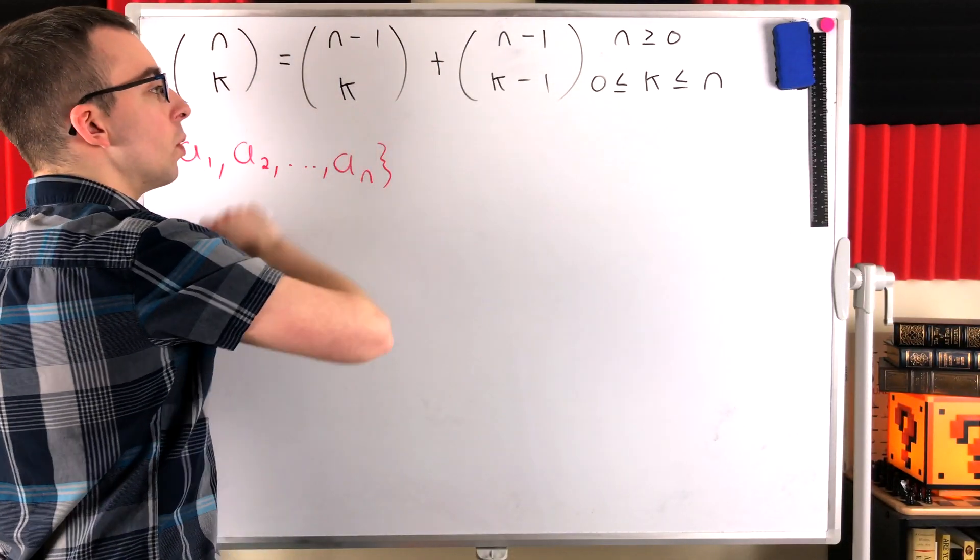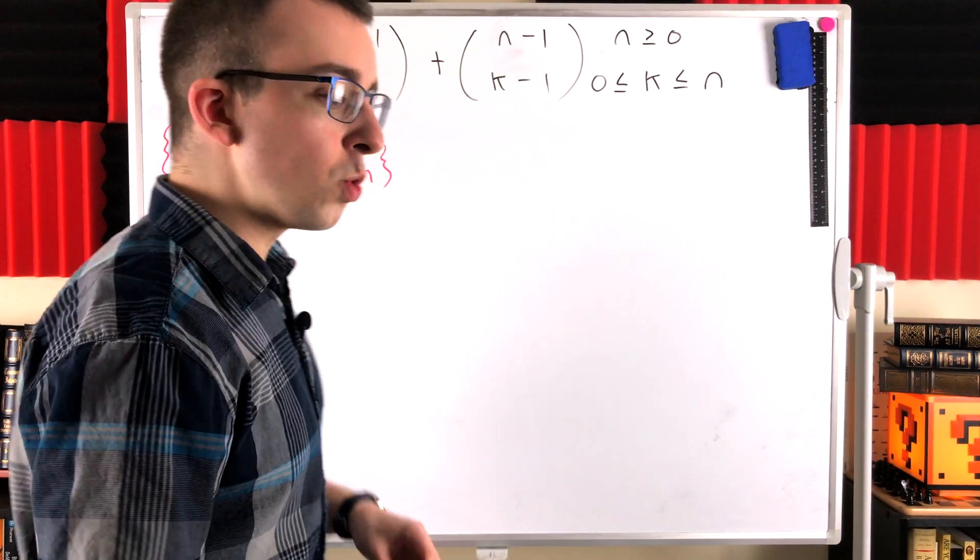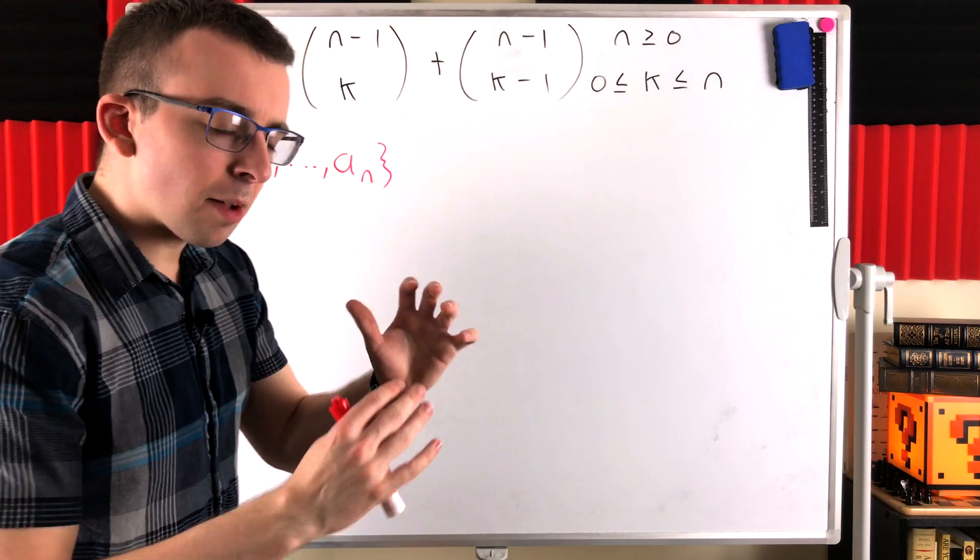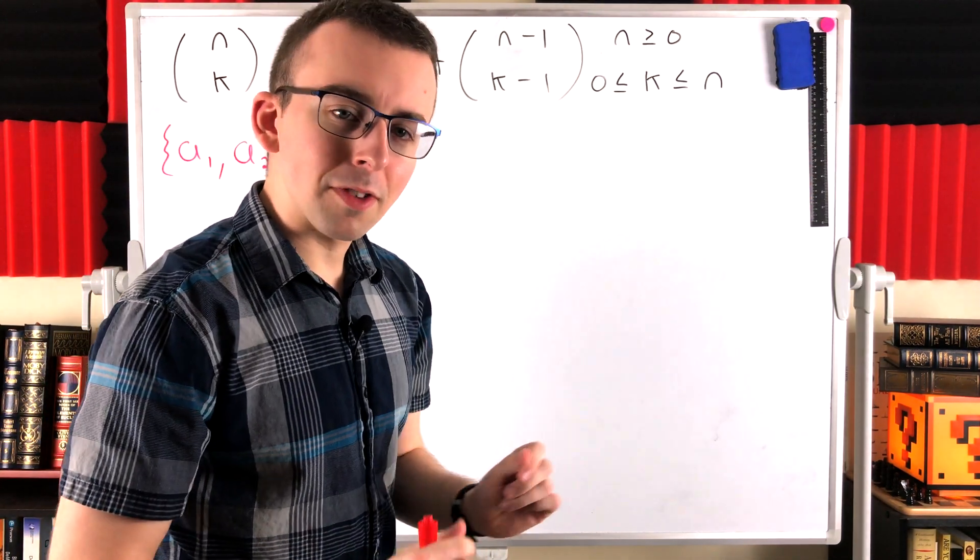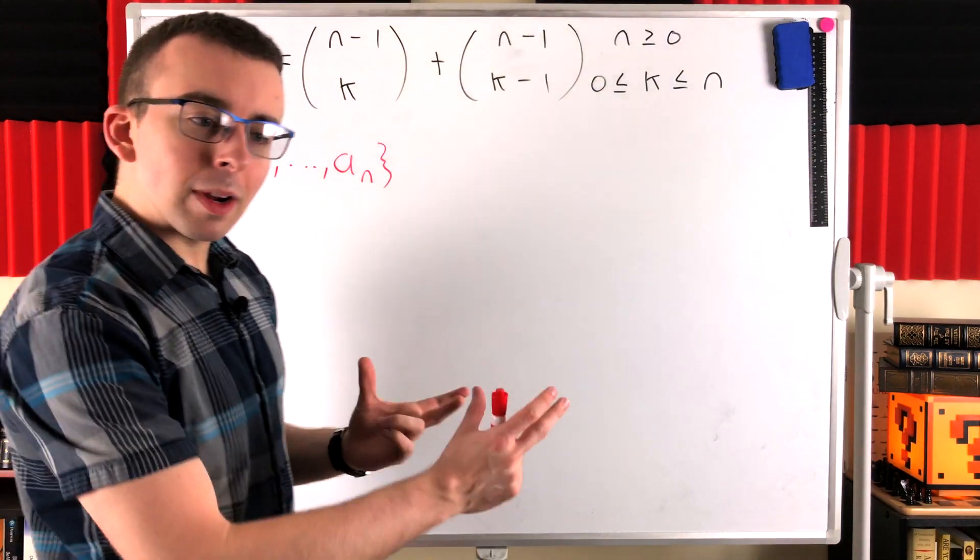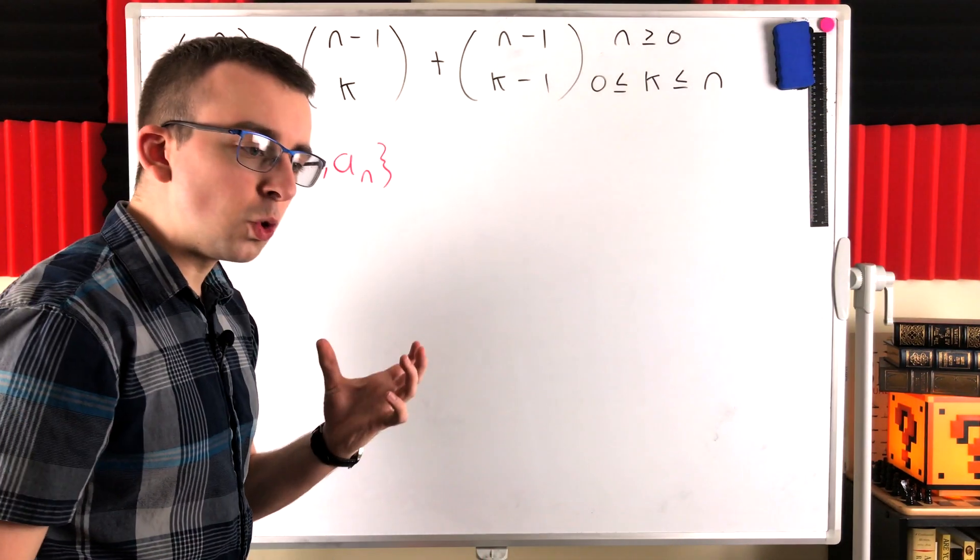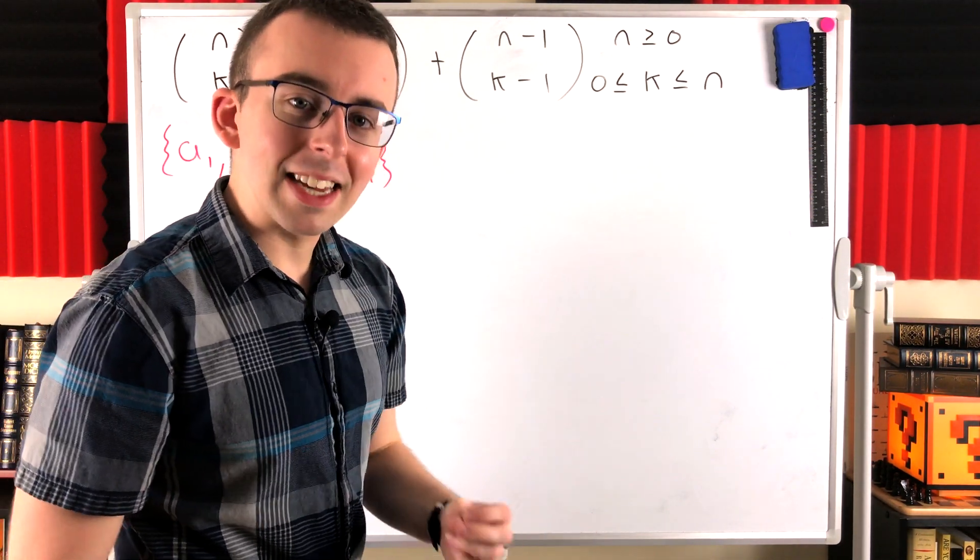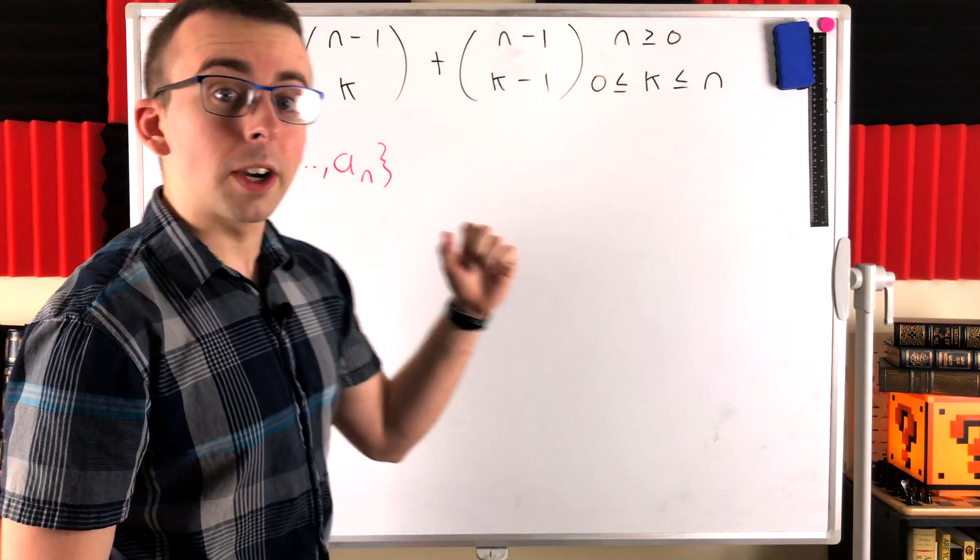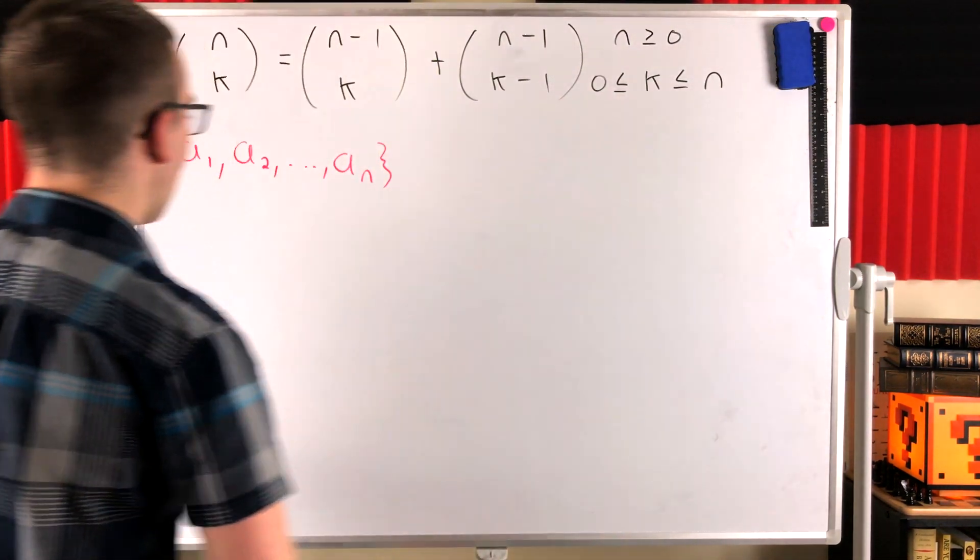Now if we're going to get the identity we want to pop out, we're going to have to find some way to count the number of ways of selecting k objects from n objects, but somehow reduce our total number of options to n minus 1. So how could we do that? We could do it by separating the total count based on the number of collections that do and don't include a particular element. So we can basically fix an element to either be included or not be included, and that's going to turn out to work just fine. So what exactly do I mean?